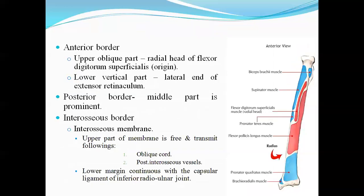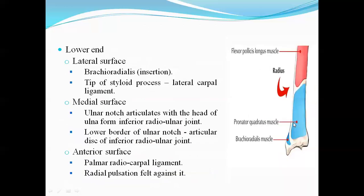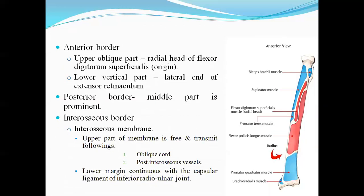The anterior border attachment is the radial head of the flexor digitorum superficialis muscle, which is the superficial group of finger flexor muscles. The lower part of the anterior border gives attachment to the lateral end of the extensor retinaculum.